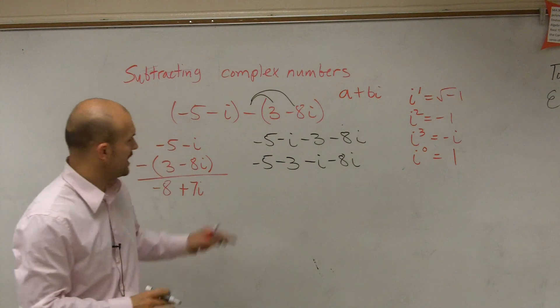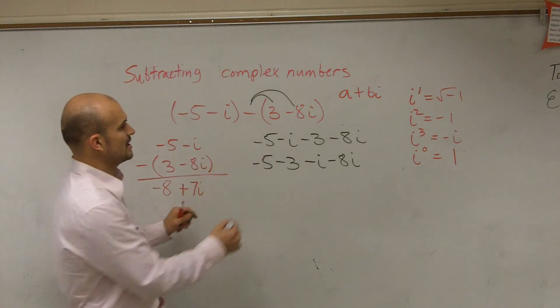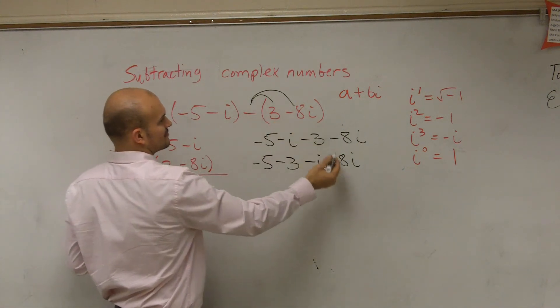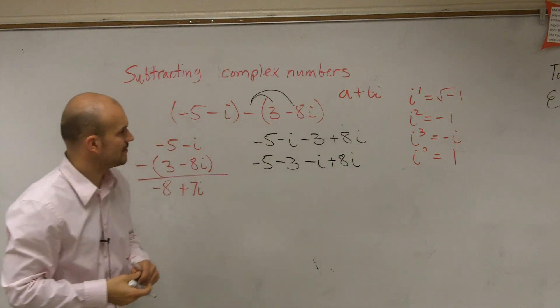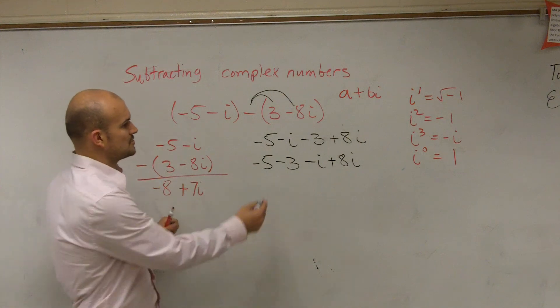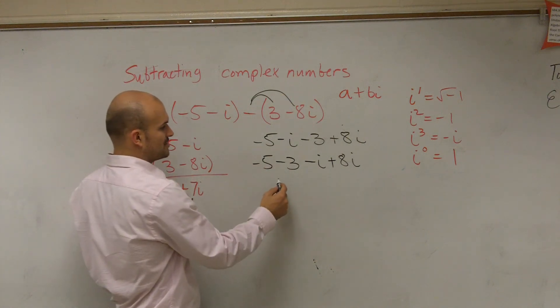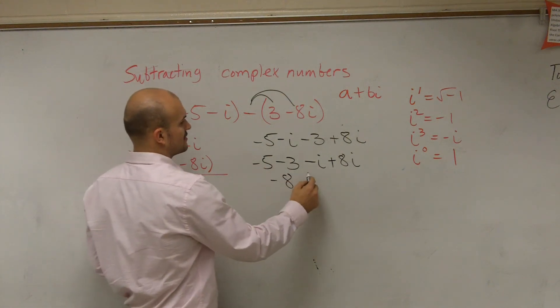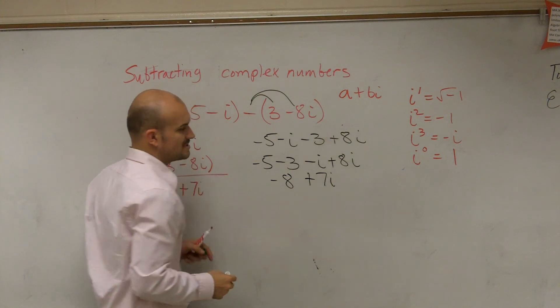So we have negative 5 - oh I'm sorry, no wonder I was getting that wrong. Negative times 3 is negative 3 and negative times negative 8i is there. So I have negative 5 plus negative 3 is going to be negative 8 plus 7i.